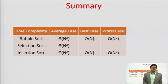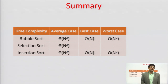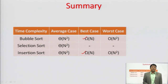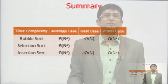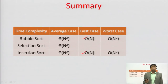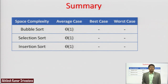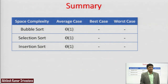In summary: bubble sort, selection sort, and insertion sort all require θ(n²) time in the average case. However, when numbers are already sorted, bubble sort and insertion sort achieve better time complexity since we can stop early. The worst case for all three is O(n²). Space complexity remains θ(1) for all three algorithms. Thank you.